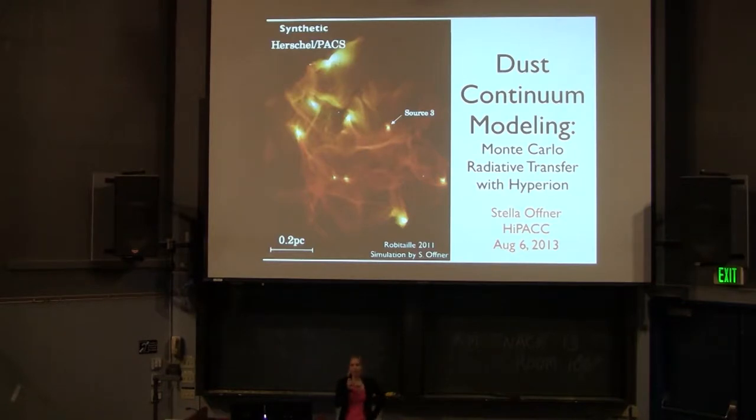Just to clarify, RadMC, which I talked about yesterday, does actually do dust continuum. So you can actually use that code to do that. But for the purpose of variety, today I'm going to switch and talk about a different dedicated Monte Carlo radiative transfer code. So here's a quick image of the kind of stuff that this code can do. This is post-processing one of my numerical simulations, a turbulent cloud with forming stars, and producing a synthetic Herschel PACS image. So you can see that the sources are standing out quite brightly. You can see a lot of this filamentary structure showing up and highlighting the dust being highlighted in dust emission.